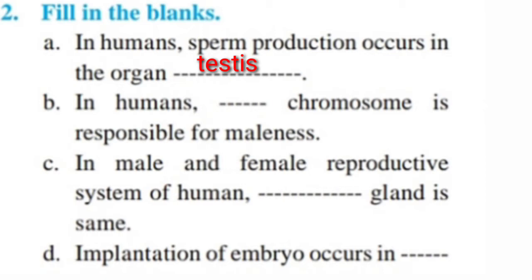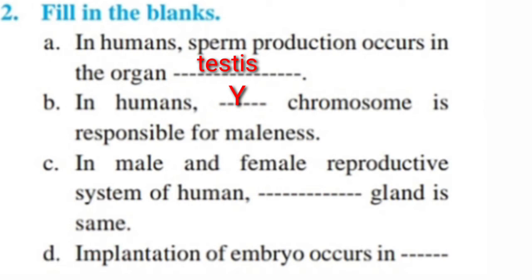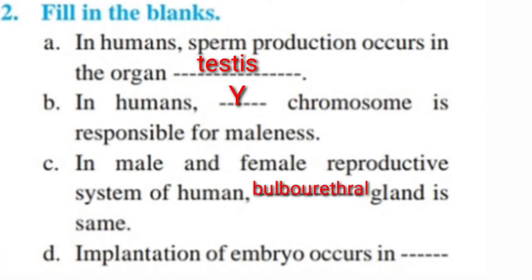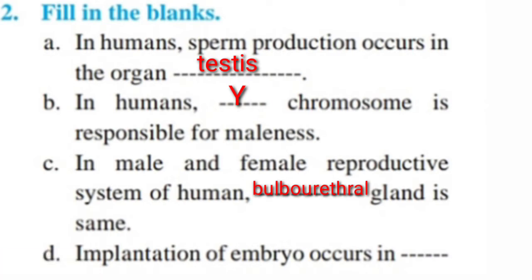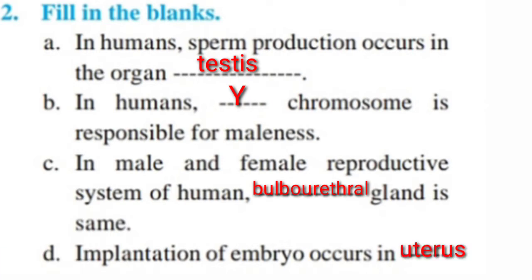B. In humans, the Y chromosome is responsible for maleness. C. In the male and female reproductive system of humans, there is no similar gland — there may be some homologies but there is no similarity. D. Implantation of embryo occurs in the Uterus.